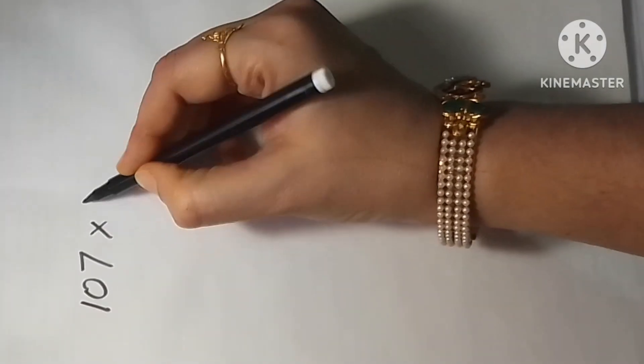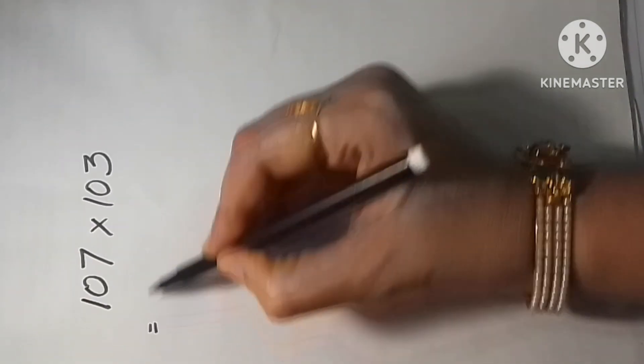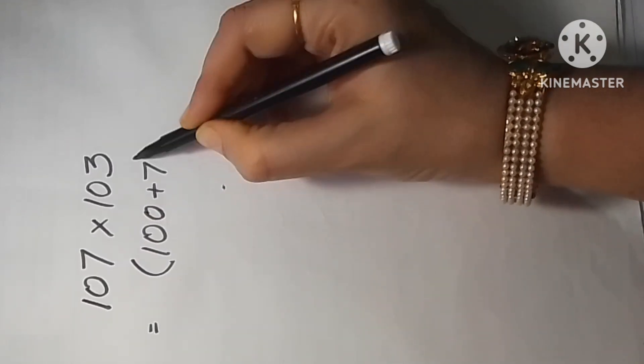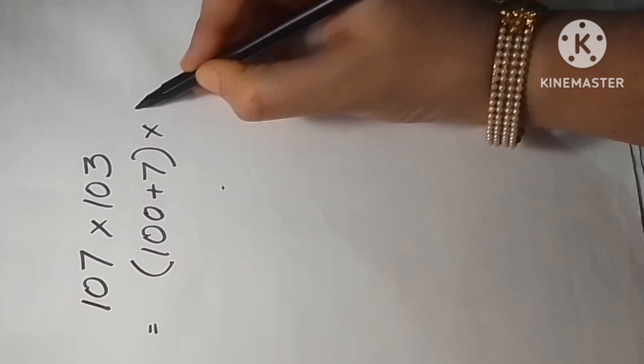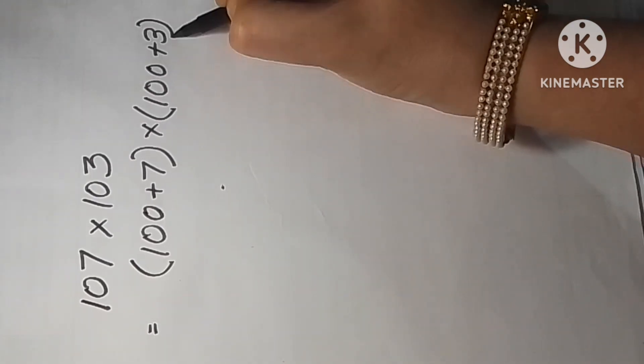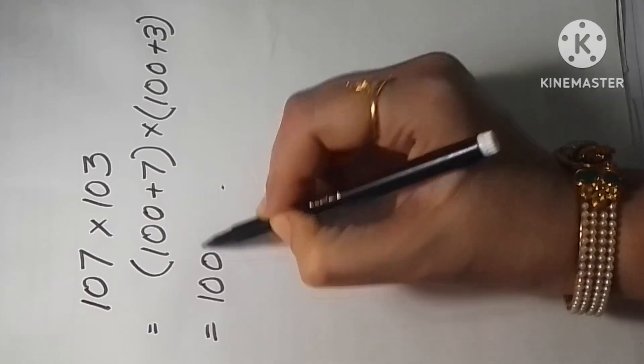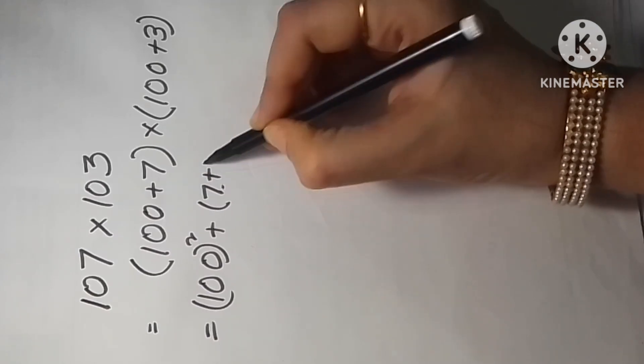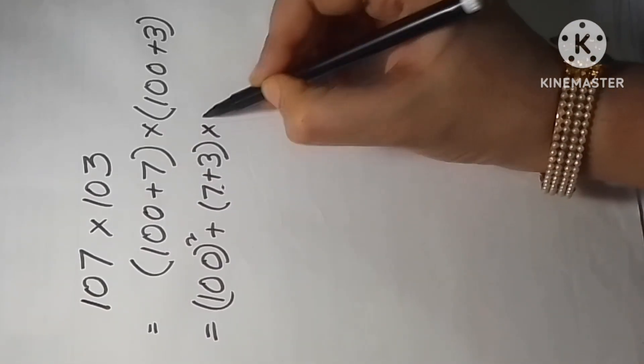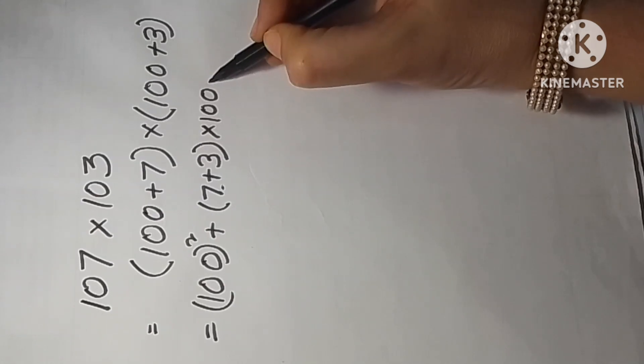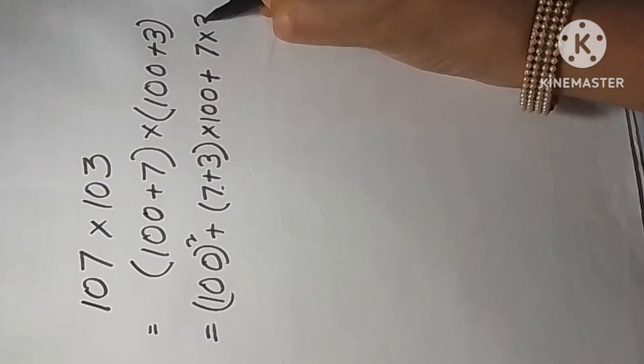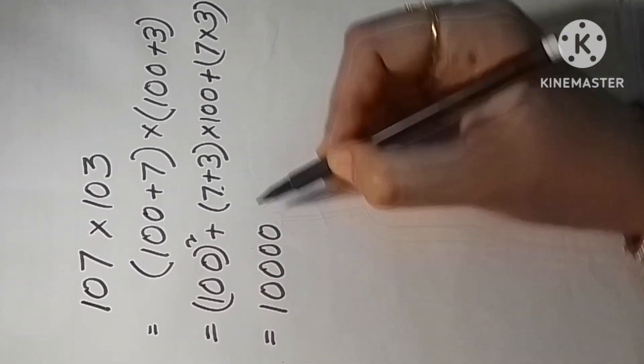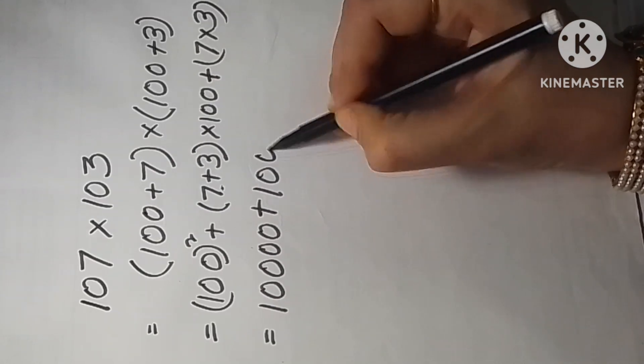Now here is an example of identity 4: 107×103. We have to express the value of this term as identity. So (100+7)(100+3), this will be the expression (x+a)(x+b). According to the formula of identity 4, it will be x²+(a+b)x+ab. Following that, we can easily find out the value of this expression.